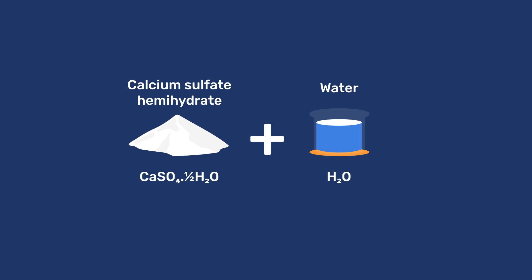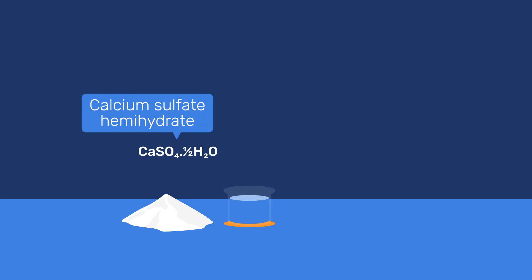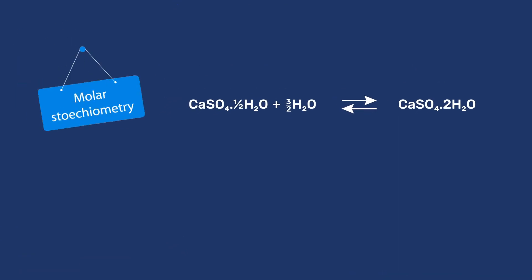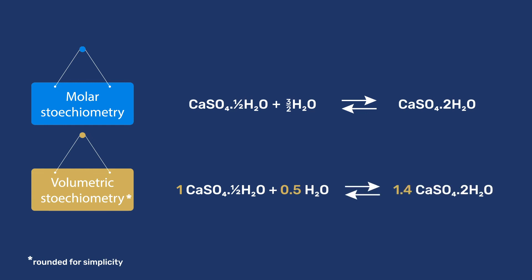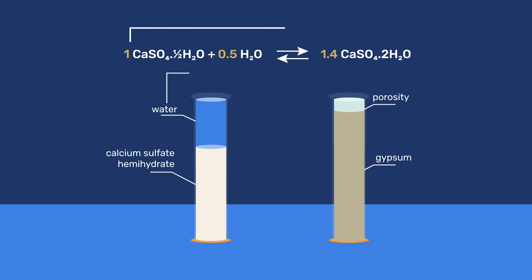The setting of gypsum results from the chemical reaction between water and plaster, although in some cases anhydrite is used, as explained in our separate video on gypsum chemistry. The reaction of plaster with water is spontaneous and exothermic. It involves one mole of calcium sulphate hemihydrate reacting with 1.5 moles of water to form one mole of gypsum. This can be rewritten with volumetric stoichiometric coefficients, whereby one volume of hemihydrate reacts with 0.5 unit volumes of water to give 1.4 unit volumes of gypsum. The most important feature here is that the volume of the solids increases by 40%, from 1 to 1.4 units. This is the main reason for the setting and hardening of gypsum, and more generally of other mineral binders.